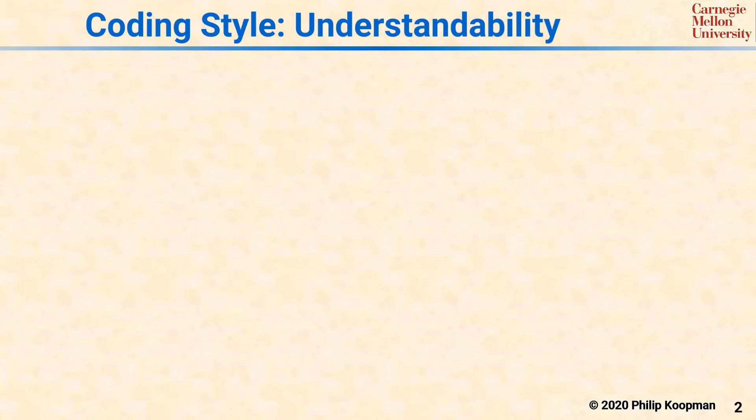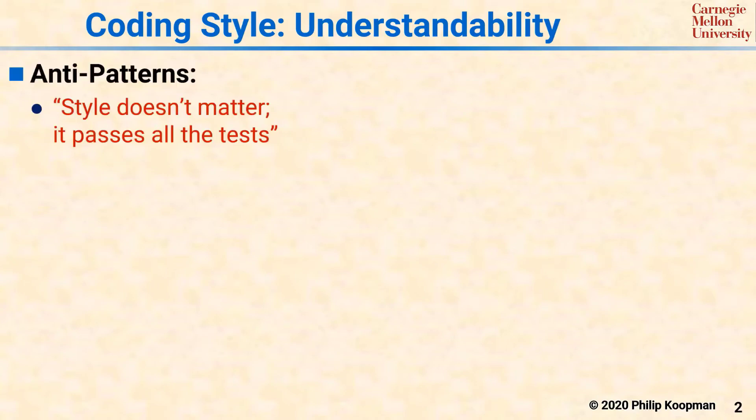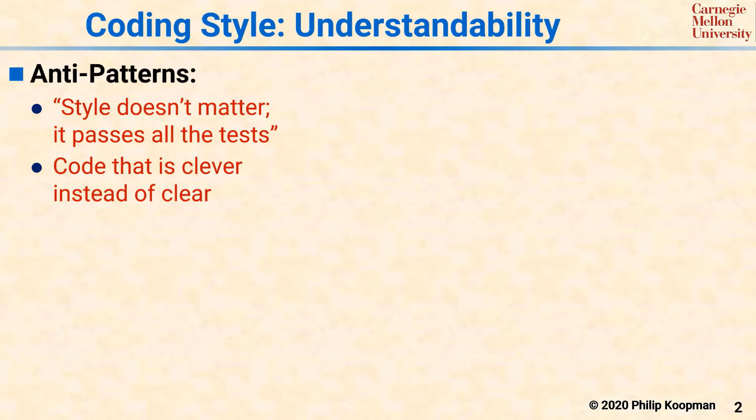At the very highest level, there are two main warning signs of bad coding style. First, if someone says coding style doesn't matter because their code passes all its tests, that tells you you probably have a coding style problem. Second, if code is written to demonstrate how clever the programmer is at using obscure language features, then it'll probably be difficult to understand, and again, you have a coding style problem.